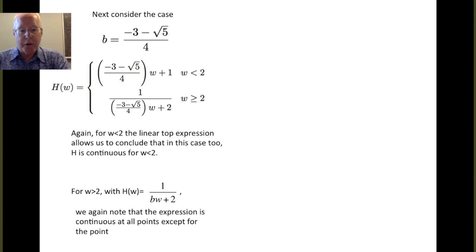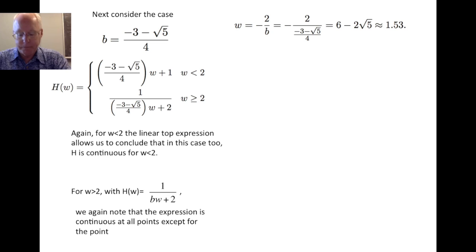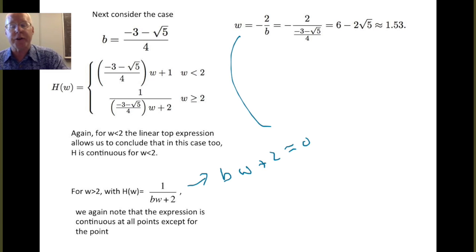For the w greater or equal to 2 part of the function, we again are looking at a reciprocal function. And again, note that the expression is continuous at all points except the point where this denominator is equal to 0. So, again, we have to worry what happens if bw plus 2 is equal to 0. And again, we solve that equation. w equals minus 2 over b. And for the value of b minus 3 minus root 5 over 4, this results in 6 minus 2 root 5, which is 1.53. And that is less than 2.